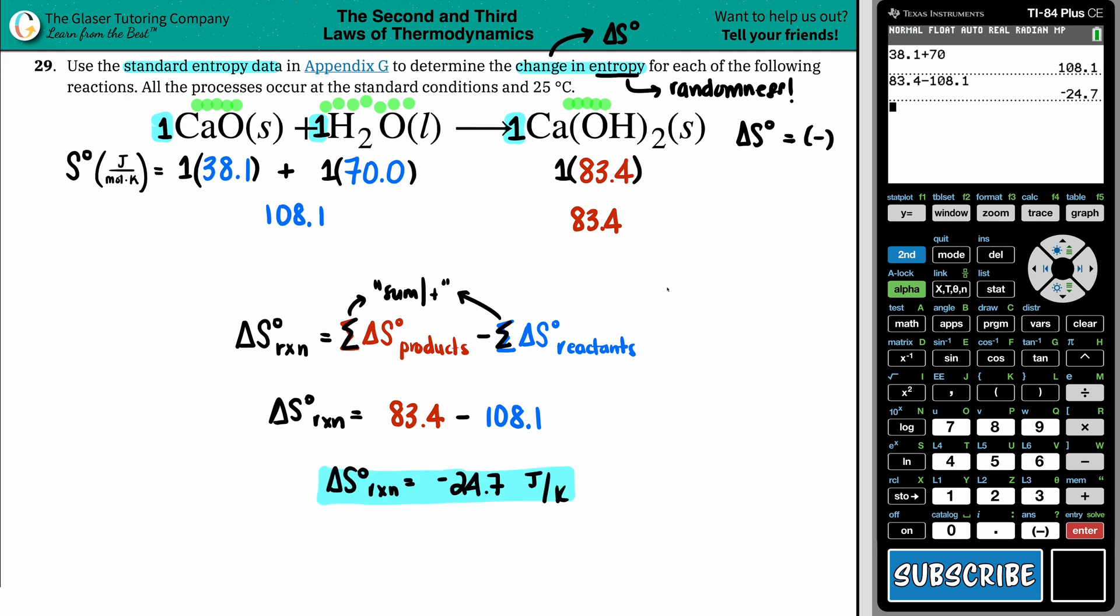So your final answer is a negative 24.7. And did we guesstimate correctly? Yes, we did. We knew it was a negative, but now we know it's exactly negative 24.7 joules per Kelvin.